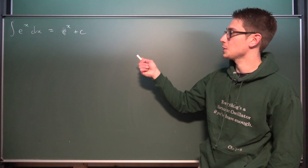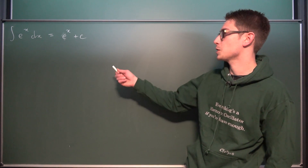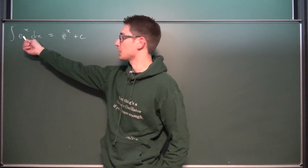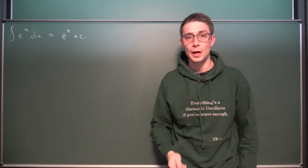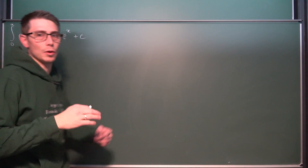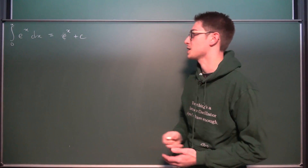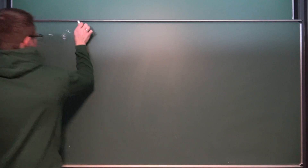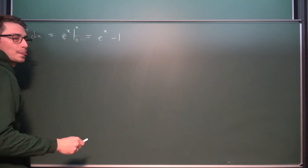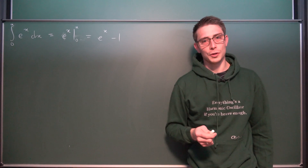Now let's get into it. What I've put here on the board is just the regular integral equation for the exponential function. We all know that the exponential function under differentiation is preserved — it stays the same. So if you use an indefinite integral you get the same result, namely e^x + C. Now, if we apply upper and lower bounds from 0 to x, where x is our new variable and the integration variable is just a dummy variable, we end up with e^x evaluated from 0 to x, giving us e^x − 1.